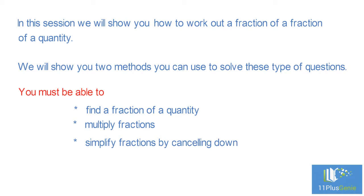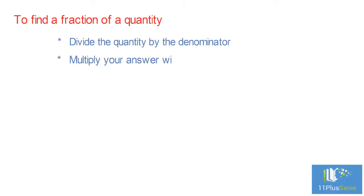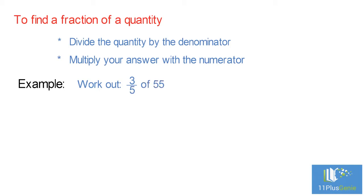To find a fraction of a quantity, divide the quantity by the denominator, then multiply your answer by the numerator. For example, work out three-fifths of 55. Solution: 55 divided by 5 equals 11; 11 times 3 equals 33. So three-fifths of 55 equals 33.